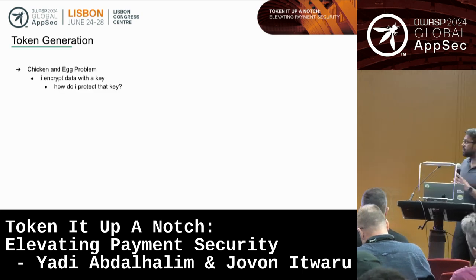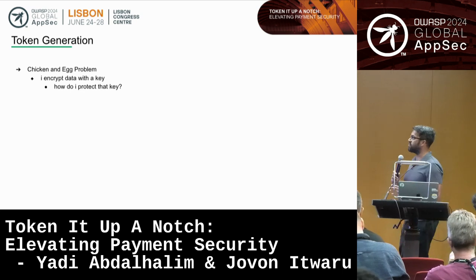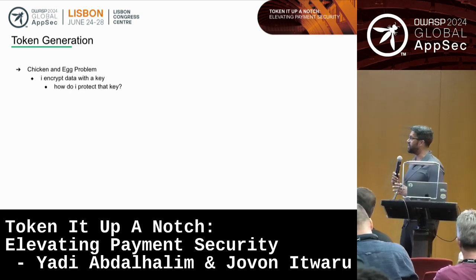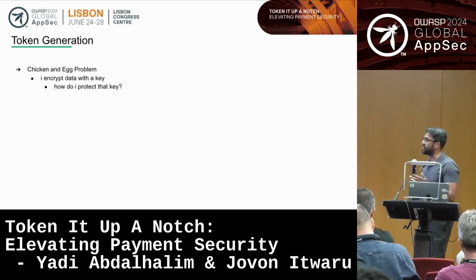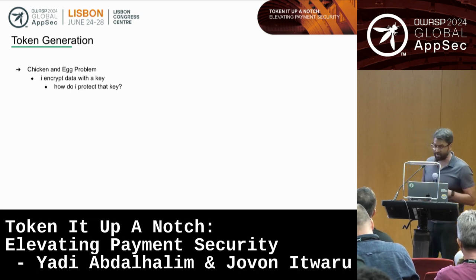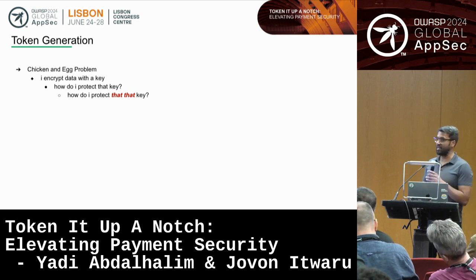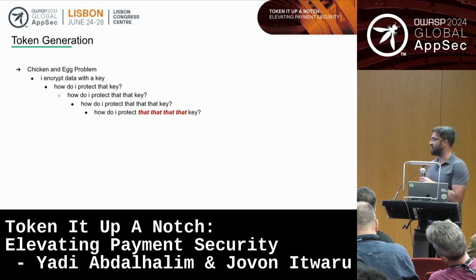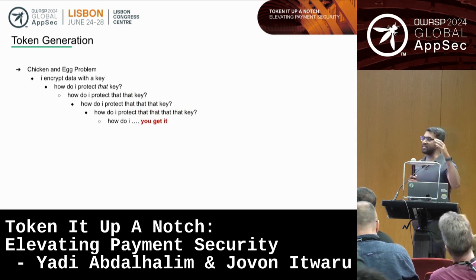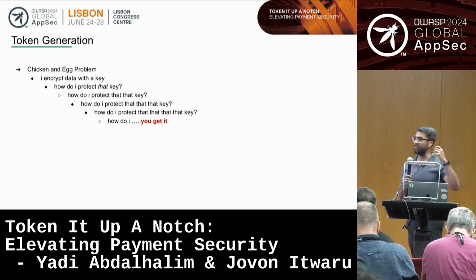We're not cryptographers, but one of the issues with crypto is: you encrypt a piece of data with a key, but then you need to protect that key. And then you need to protect the key that encrypts the key, and you keep going. So you have this hierarchy of keys — but what key do you ultimately protect? This leads us to a thing called envelope encryption.